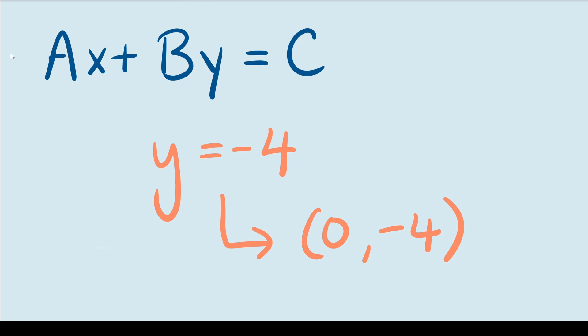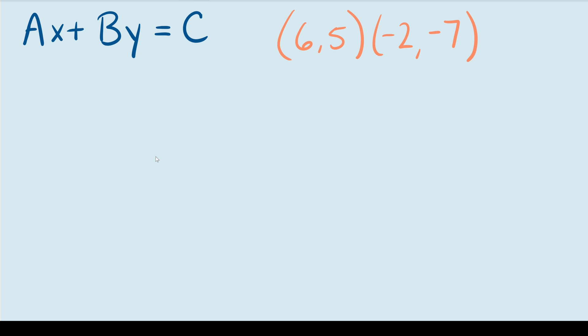Now that covers the basics of standard form. Let's get deeper into this topic. So here, I have another example that I want you to try solving first. I have given you the ordered pairs 6, 5 and negative 2, negative 7. Given these ordered pairs, find the standard form of the line.